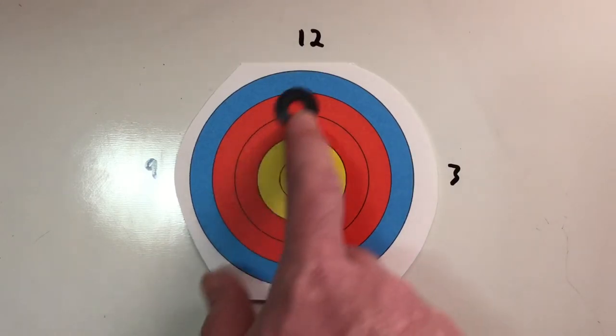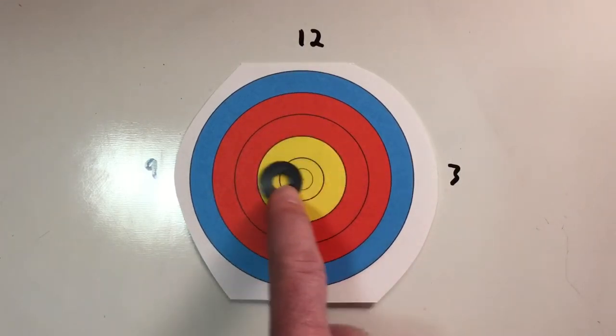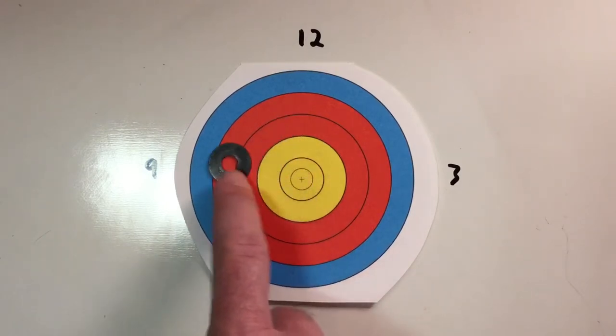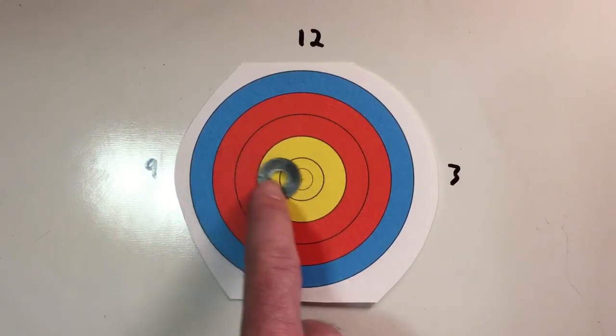So it's always ideal to set up either a little bit high and come down into it, or maybe a little bit high and a little bit left for a right-handed archer, and then be able to come into it.